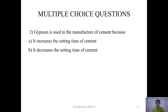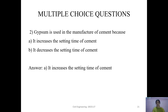Question 2: Gypsum is used in the manufacture of cement because — A) it increases the setting time of cement, or B) it decreases the setting time of cement. Gypsum is used in the manufacture of cement because it increases the setting time of cement. Therefore, the answer is A.